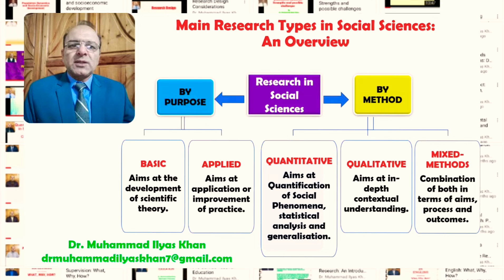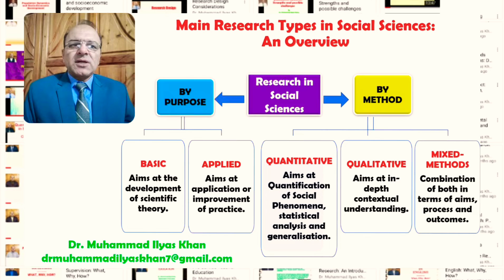In applied research, although there might be instances of theory development, the basic aim is to get insights into our practices and improve them. Applied research is aimed at the application of research findings in a practical sense. Research by method in social sciences has generally been categorized into three categories.